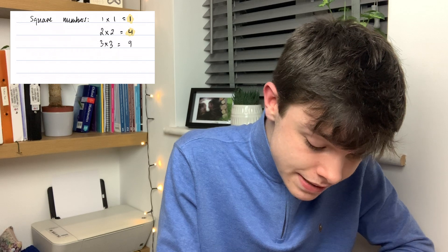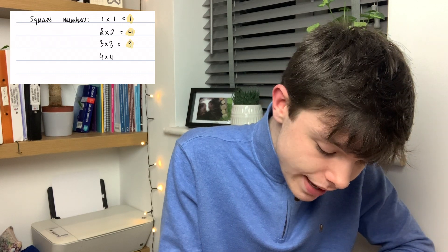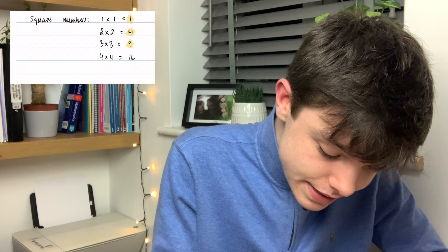I'm going to take the maths right back to the beginning and we're going to start by looking at square numbers. Square numbers are created when you multiply two integers by itself. For example, if we multiply one by itself — one times one — that gives us one, so one is a square number. Two times two is four, so four is a square number. Three times three is nine, so nine is a square number. Four times four is 16, so 16 is a square number.